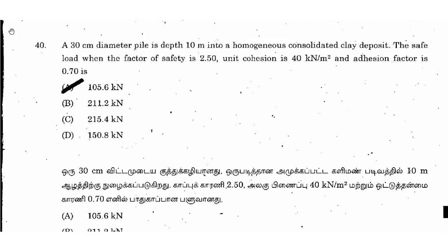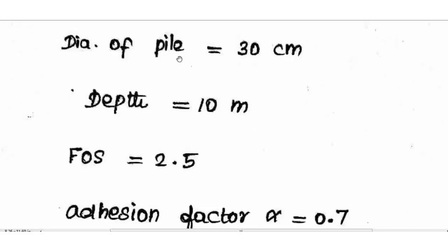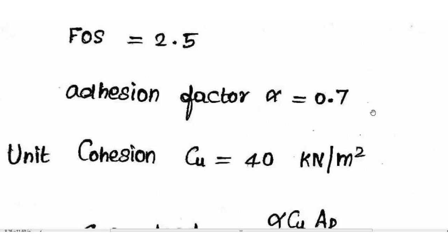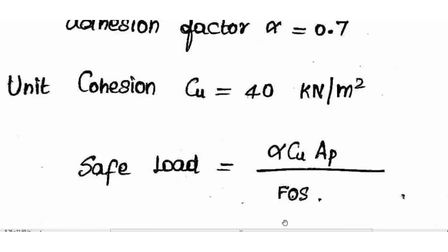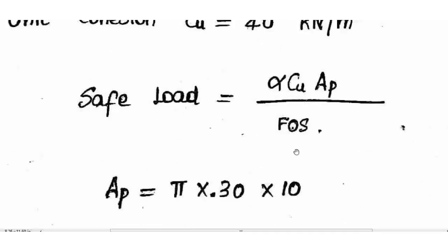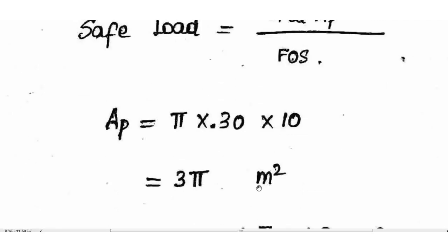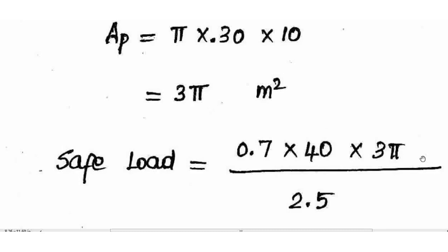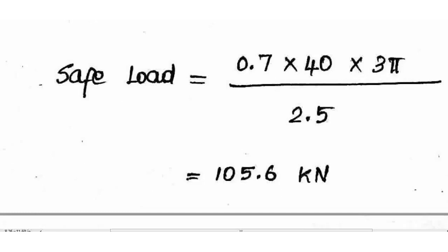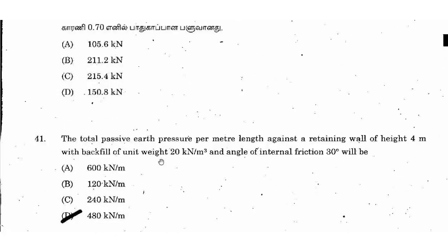A 30cm diameter pile is driven 10m into homogeneous consolidated clay. Factor of safety is 2.5, unit cohesion is 40 kN/m², adhesion factor is 0.7. Safe load = α × Cu × Ap ÷ FOS, where Ap (pile surface area) = π × 0.3 × 10 = 9.42 m² ≈ 3.5π. Calculating: 0.7 × 40 × 9.42 / 2.5 ≈ 105.6 kN. The right answer is option A, 105.6 kN.